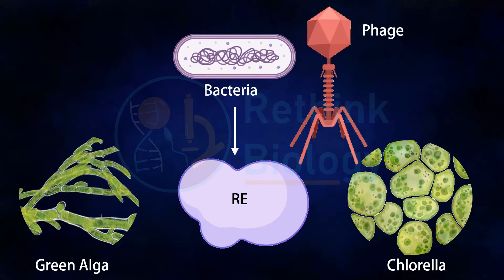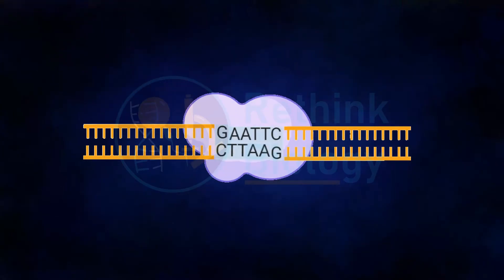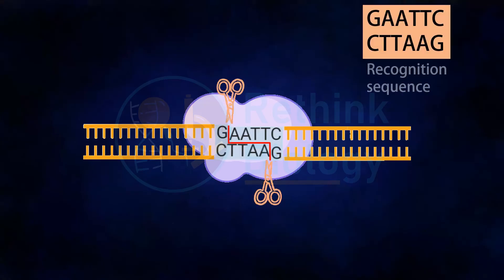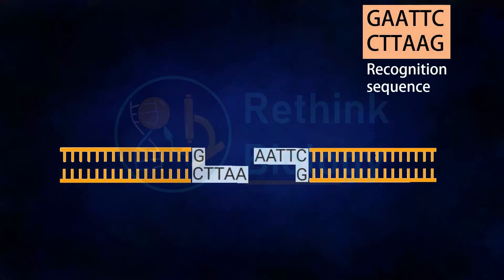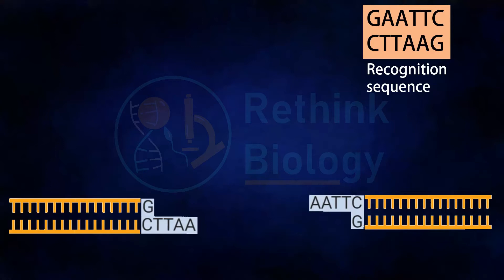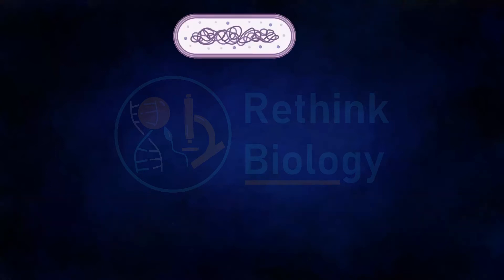These have also been found in green alga, Chlorella, etc. Restriction enzymes are a specific class of endonucleases which can recognize a specific base sequence of four to six nucleotides long and make a cut at that site only, which is called the restriction site. Those sequences are called the recognition sequences.